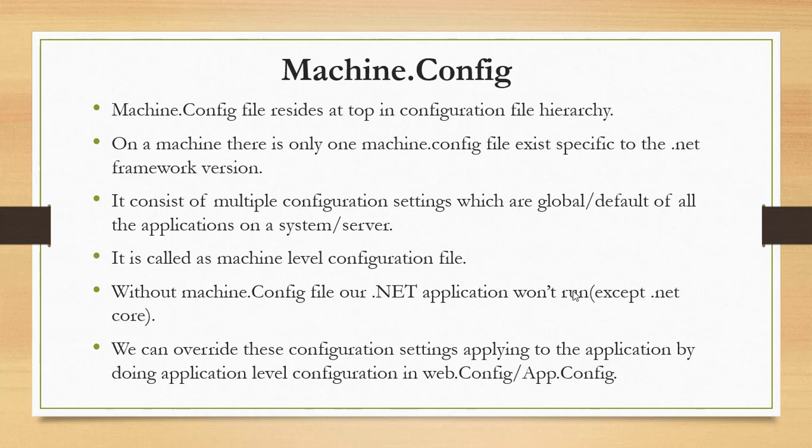machine.config consists of global configuration settings common to all applications running on the server or personal machine. It is called a machine level configuration file because it holds global configuration information. Without machine.config, .NET applications won't run — though this doesn't apply to .NET Core, which is platform-independent and makes machine-level configuration less relevant. You can override settings from machine.config by doing application-level configuration in web.config or app.config.